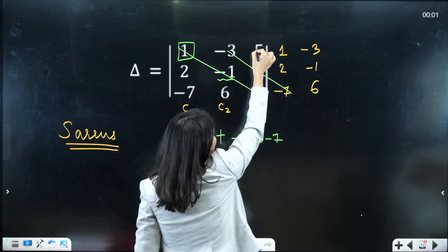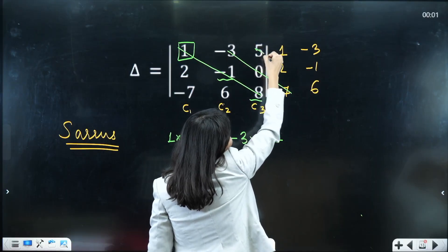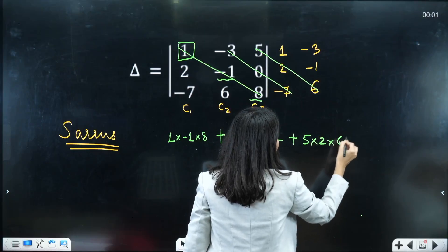Now next, you will start with 5, so this diagonal, then the second diagonal, then the third diagonal, 5, 2 and 6. So plus 5 multiplied by 2, multiply 6.